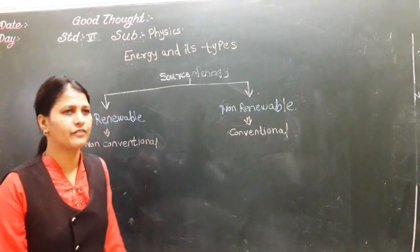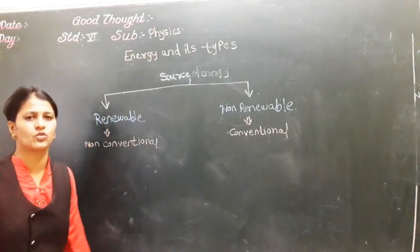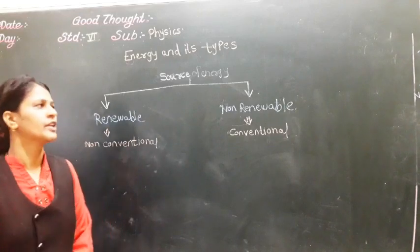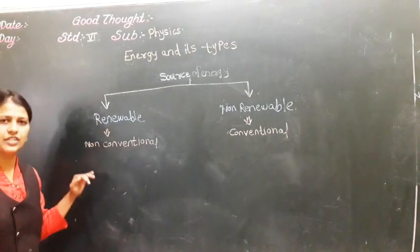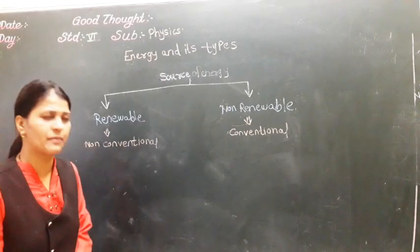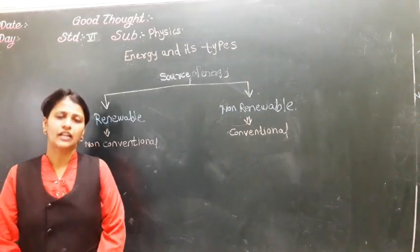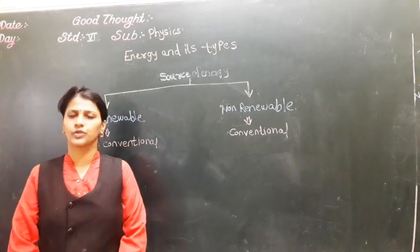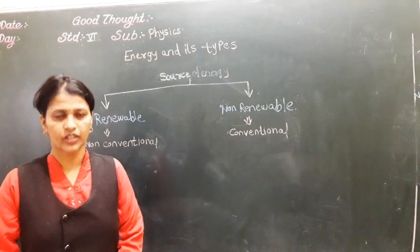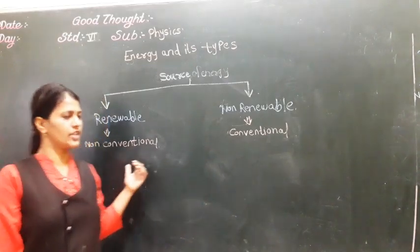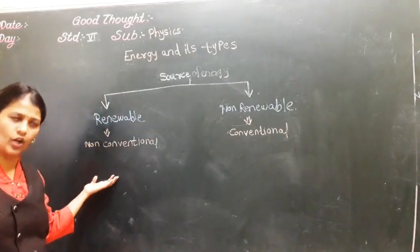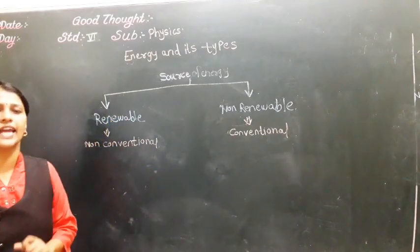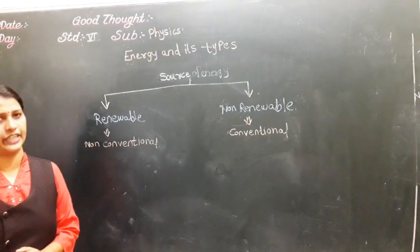So today we have discussed the two main sources of energy: renewable and non-renewable. Renewable is also called non-conventional, while non-renewable is also called conventional source of energy. Today's homework is to write five examples of each — renewable and non-renewable sources of energy.